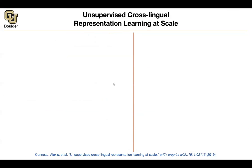Let's move on to an extension of XLM, and we want to extend it to a lot of languages. The previous one was about 15 languages. We want to extend it to 100 languages, and it's a matter of scale. The underlying model is going to be RoBERTa, which we learned about for a single language — English. This is going to be a cross-language model for multiple languages.